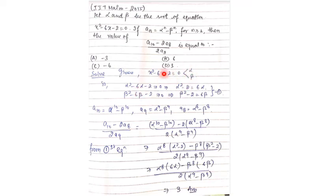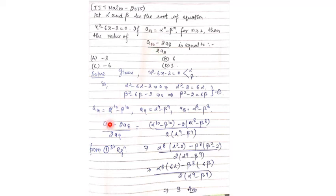Since alpha and beta are roots of x² - 6x - 2 = 0, substituting gives alpha² - 6·alpha - 2 = 0, so alpha² - 2 = 6·alpha. Similarly, beta² - 2 = 6·beta. This is our first equation. Now, a10 = alpha^10 - beta^10, a9 = alpha^9 - beta^9, and a8 = alpha^8 - beta^8. Substituting into the expression gives (alpha^10 - beta^10 - 2(alpha^8 - beta^8)) / (2(alpha^9 - beta^9)).